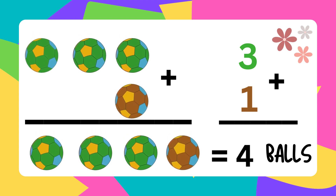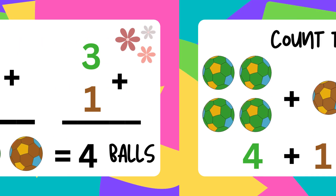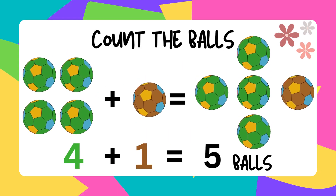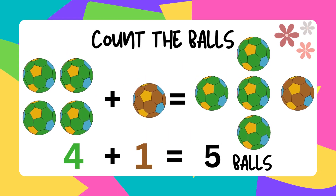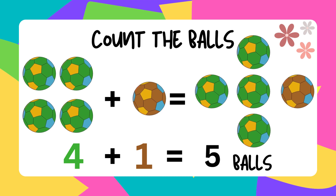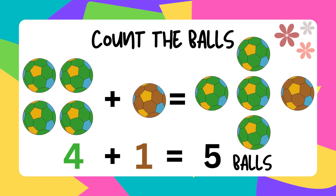Four green bowls plus one brown bowl. The sum of bowls is five.